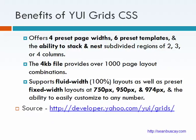Here are some of the benefits of using the YUI Grid CSS files. They offer four preset page widths plus six preset templates and the ability to stack and nest subdivided regions of two, three, or four columns. Their small 4-kilobyte file provides over 1,000 page layout combinations. It supports fluid width 100% layouts as well as preset fixed width layouts at 750 pixels, 950 pixels, and 974 pixels, and the ability to easily customize it to any number.